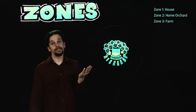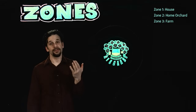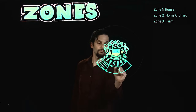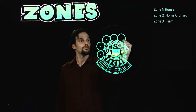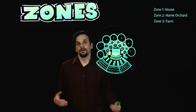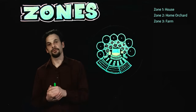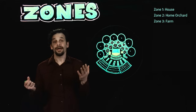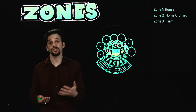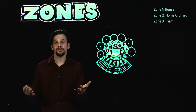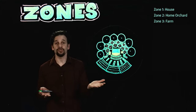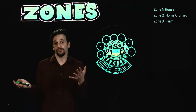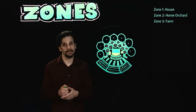Zone three is what we think of as the farm zone. It's visited more infrequently with more extensive methods of cultivation. This is where we might grow a cash crop of vegetables or fruits, orchards, firewood, pasture, large ponds, hedgerows, and larger animals like cows, sheep, goats, and pigs.